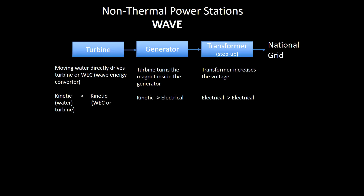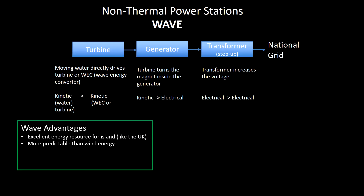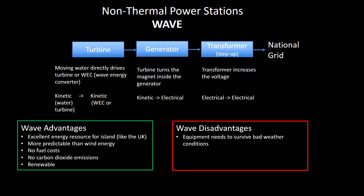Wave power is slightly different — pontoons float on top of the water and twist or bend to extract energy from the waves, rather than using a rotating turbine, though the principle is the same: extracting kinetic energy from the water. Advantages: excellent for islands surrounded by large amounts of sea, waves are slightly more predictable than wind, no fuel costs, no carbon dioxide emissions, and renewable. Disadvantages: equipment must survive bad weather and is often difficult to get to for repairs, with potential disruption to shipping.